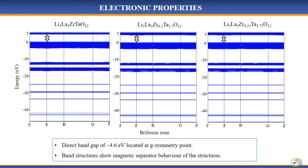Further calculations on the band structure were performed to evaluate the electronic stability of the structures. From the results, it shows that the band structures have a direct band gap of approximately 4.6 electron volts along the gamma symmetry point. The large band gap indicates that the materials have an insulating behavior.